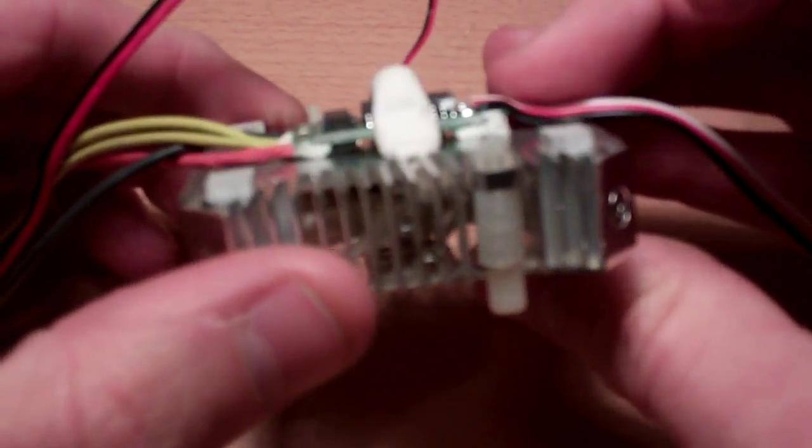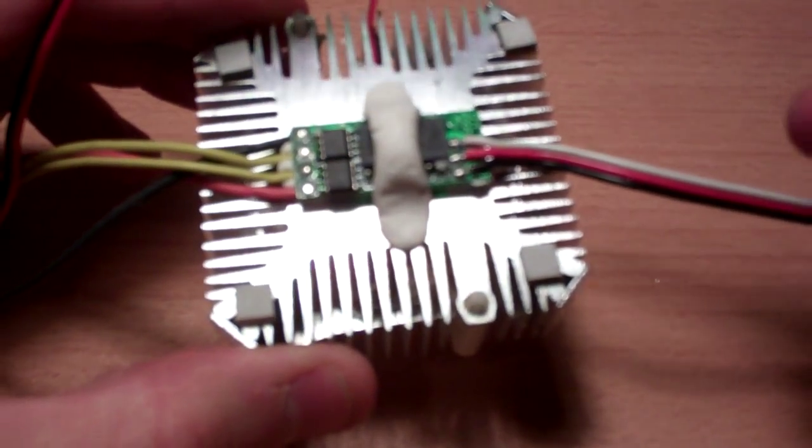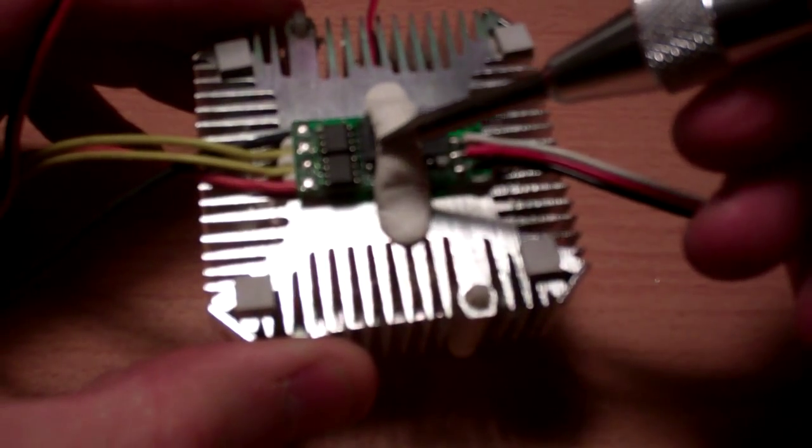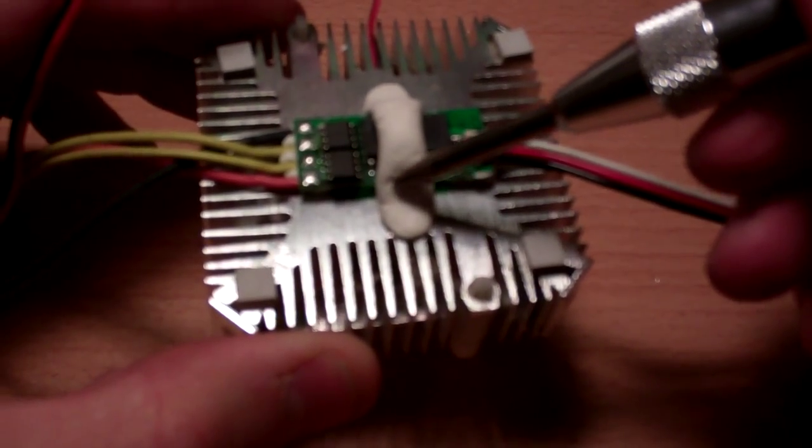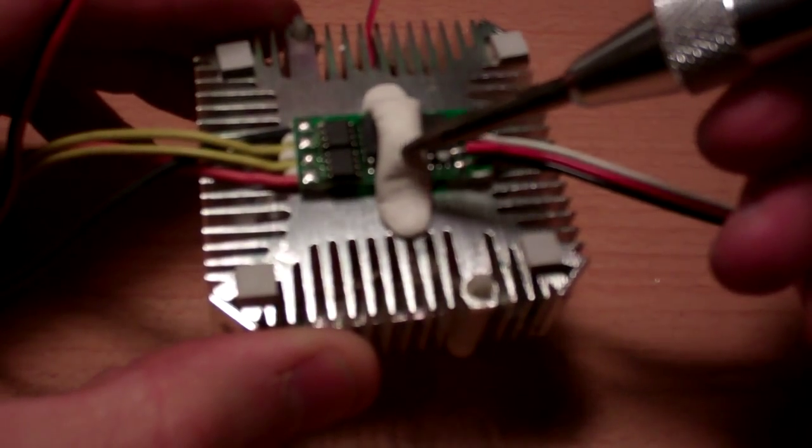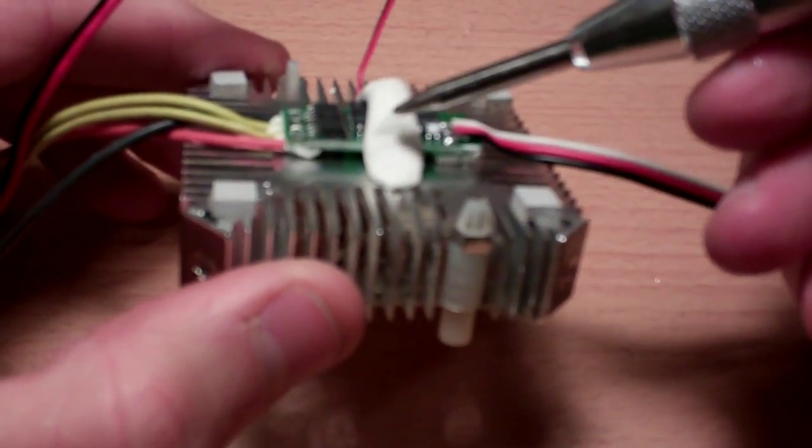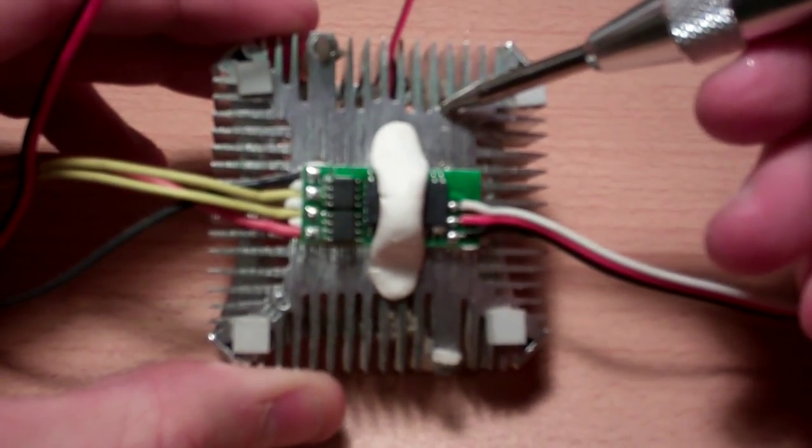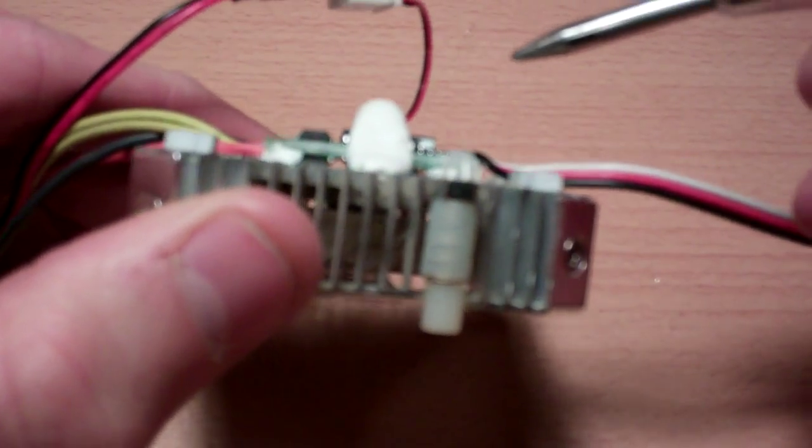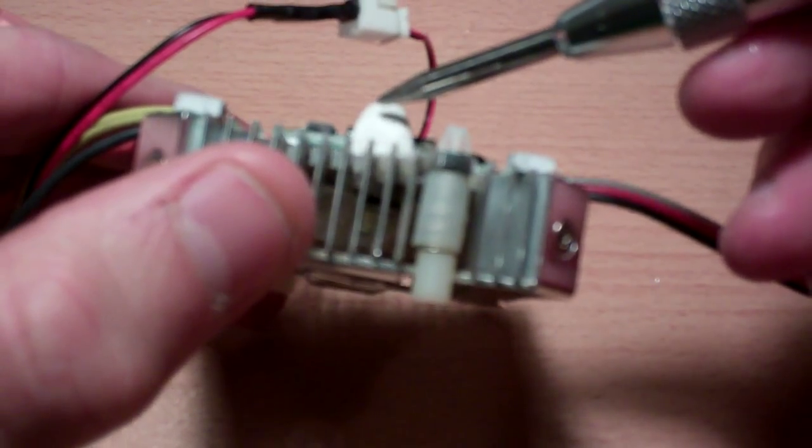And then what I did was I used some Sugru, this is some Sugru right here, basically an adhesive silicone type material. So this is holding the ESC to the heatsink. And then underneath the ESC,